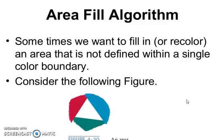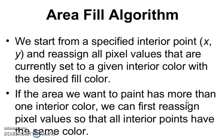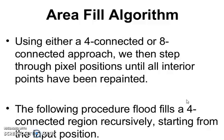Sometimes we want to fill an area that is not defined within a single color boundary. In such cases we have multiple color boundaries. We can paint such areas by replacing a specified interior color instead of searching for a particular boundary color. This fill procedure is called the flat fill algorithm. We start from a specified interior point (x, y) and reassign all pixel values currently set to a given interior color with the desired fill color. If the area has more than one interior color, we can first reassign pixel values so that all interior points have the same color.